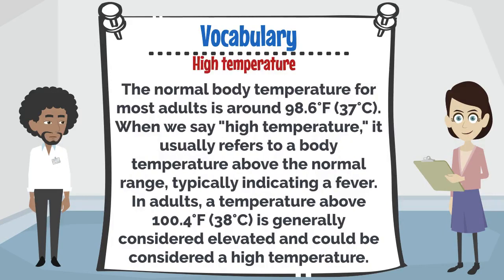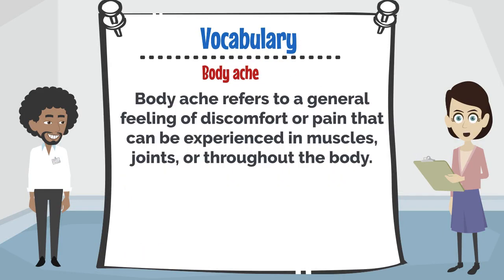High temperature: the normal body temperature for most adults is around 98.6 degrees Fahrenheit. When we say high temperature, it usually refers to a body temperature above the normal range, typically indicating a fever. In adults, a temperature above 100.4 degrees Fahrenheit is generally considered elevated and could be considered a high temperature. Body ache refers to a general feeling of discomfort or pain that can be experienced in muscles, joints, or throughout the body.